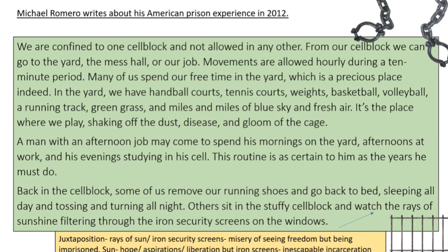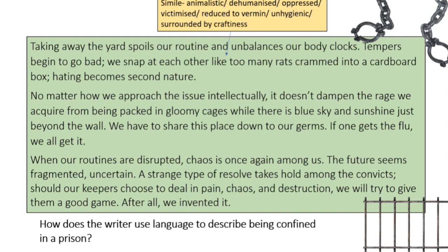So that's a technique to talk about: the juxtaposition. Use that quote and those notes. 'Taking away the yard spoils our routine and unbalances our body clocks. Tempers begin to go bad. We snap at each other like too many rats crammed into a cardboard box. Hating becomes second nature.' So we've got the simile 'like too many rats crammed into a cardboard box.' This portrays the prisoners as animalistic, dehumanized, oppressed, victimized, reduced to vermin — because they've been dehumanized so thoroughly they're reduced to vermin. Also portrays them as unhygienic because rats are unhygienic, and the fact that it says 'crammed into a cardboard box' shows he's perhaps surrounded by craftiness because rats are associated with craftiness.